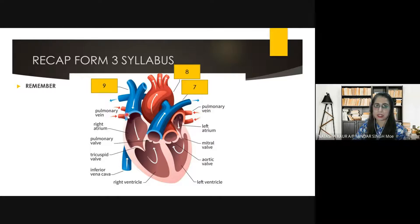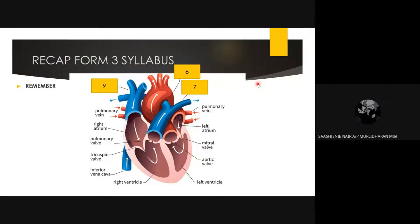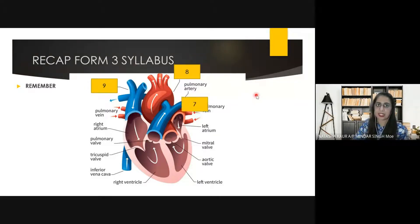So you have here pulmonary veins that carry oxygenated blood into the heart — into the left atrium. Now number seven here — this one that carries deoxygenated blood out — this will be the pulmonary artery.